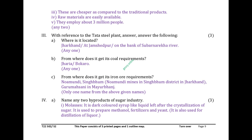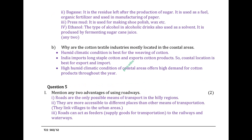Name any two byproducts of sugar industry. Molasses: a dark-colored syrup-like liquid left after crystallization of sugar, used to prepare methanol, fertilizers, and yeast, and also for distillation of liquor. Bagasse: the residue left after production of sugar, used as fuel, organic fertilizer, and in manufacturing of paper. Press mud: used for making shoe polish, wax, etc. Ethanol: the type of alcohol in alcoholic drinks, also used as a solvent, produced by fermenting sugarcane juice.